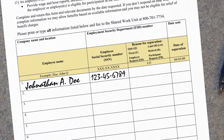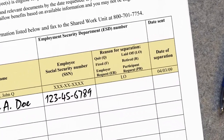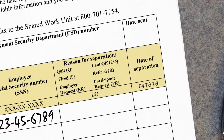Next we need to know the reason why they are no longer a participant in the shared work program. Use the following abbreviations when noting the reason: Q if they quit, F if they were fired, LO if they were laid off, R if the participant retired and will not return, ER if the employer is requesting their removal for other reasons, or PR if the participant is requesting to be removed from the program.